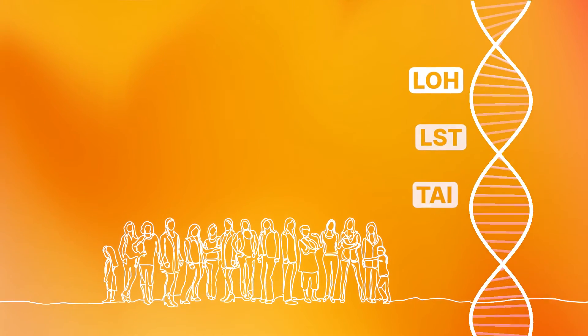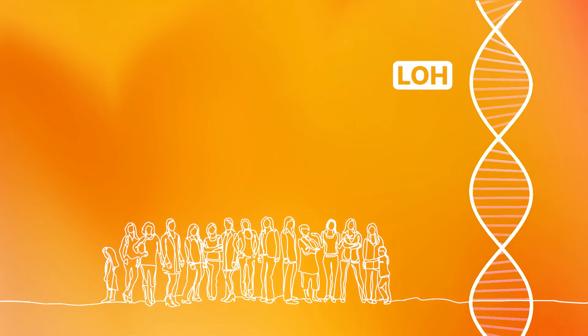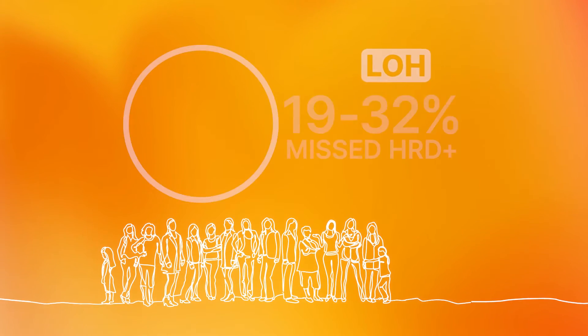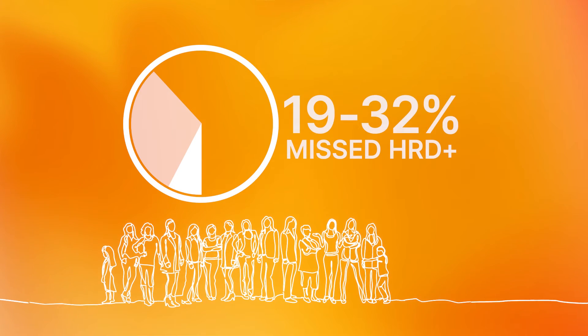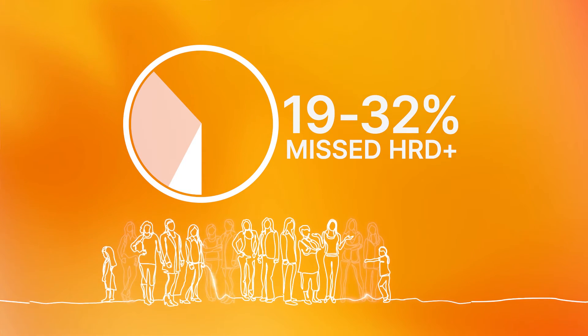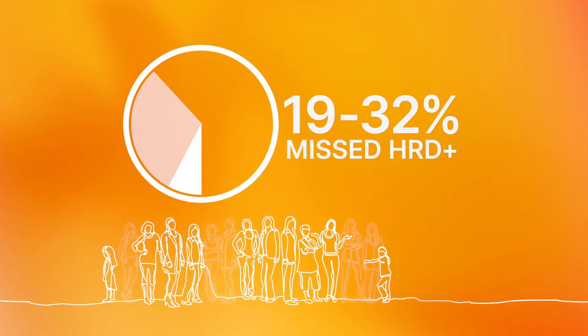If tests only look at causal genes or at one genomic scar, critical information may be missed. In one study of two patient groups, 19 to 32 percent of those identified as HRD-positive would have been missed if just looking at BRCA and percent LOH alone.